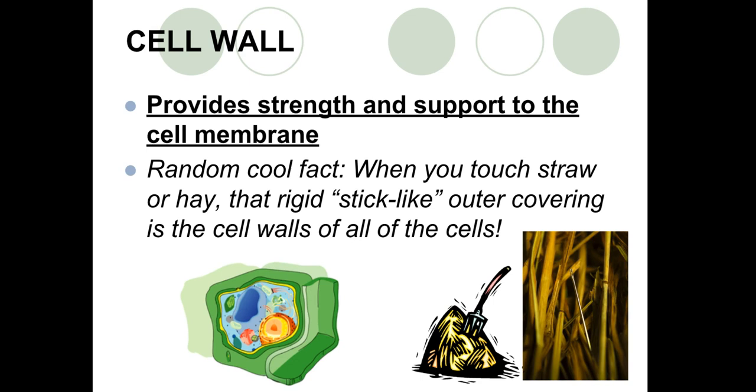Let's start with the cell wall. The job of the cell wall is to provide strength and support to the cell membrane. Remember the membrane is like a security fence. So the cell wall is like a security wall where nothing can get through unless you open up some sort of gate. The cell wall provides strength and support to the cell membrane. Random cool fact, have you ever touched straw? That's what you're feeling. It's the tough outer covering or the dried up cell walls of all the cells.